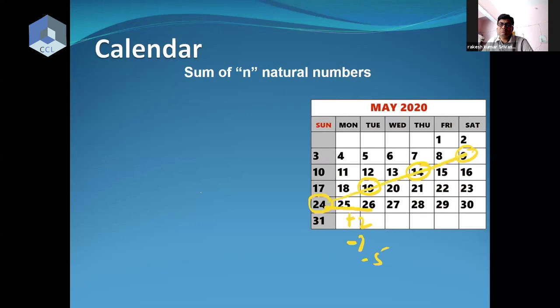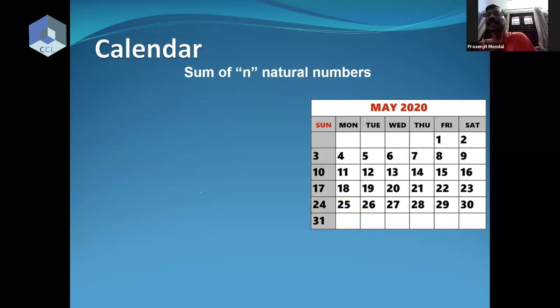And they all fall in a line. So what does this mean? Draw any line in the calendar and it will be in arithmetic progression. Now there's one more thing. The 3×3 matrix we considered — there is an interesting thing we are seeing now.